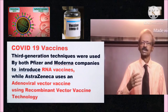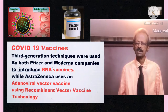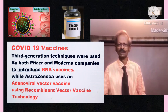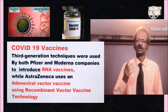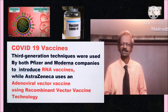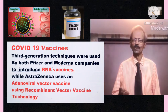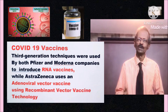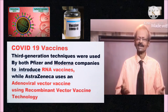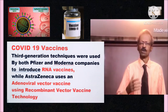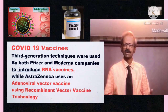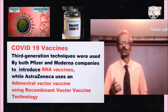The million dollar question is: which technology is being used to prevent COVID-19? Virtually every vaccine technique is being employed. However, third generation techniques were used by both Pfizer and Moderna in the USA to introduce mRNA vaccines using DNA vaccine techniques, while AstraZeneca uses an adenovirus vector vaccine using recombinant vector vaccine technology.